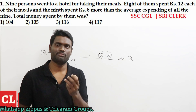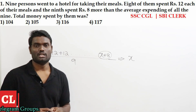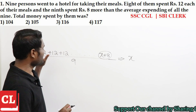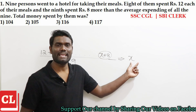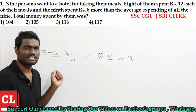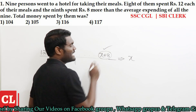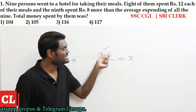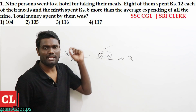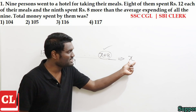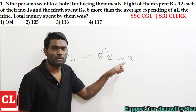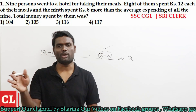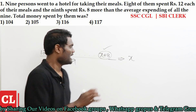But we don't have time in examinations, so if we go with the concept of equal distribution, solving this question will be really simple. When we say these 9 persons' average is X, the meaning is each and every one should have X. But the 9th person is having 8 rupees more than X. This means the 9th person has given these 8 rupees to the remaining persons, so that all will become X.